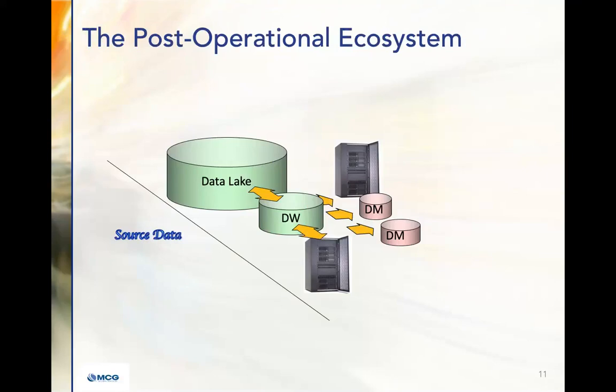Now let's look at the post-operational ecosystem. Your data lake looks pretty big compared to the warehouse, doesn't it? Yes, it can get much larger than the warehouse, depending on your business — healthcare, telecom, supply chain, manufacturing, retail. But size doesn't really matter so much anymore. What's important is the architecture, the arrows, how things are flowing, and that you don't have hyper redundancy in this architecture. You might have things alongside the data warehouse for workloads that don't belong in the warehouse. The data warehouse feeds marts, source data feeds marts, et cetera — your own post-operational ecosystem. No two are the same.